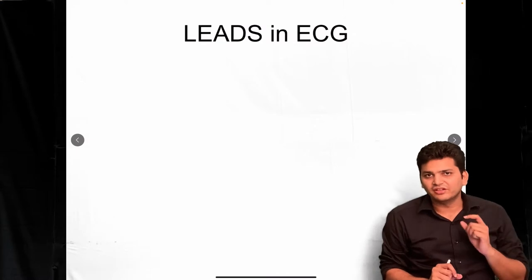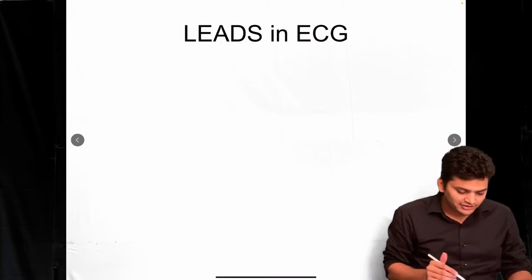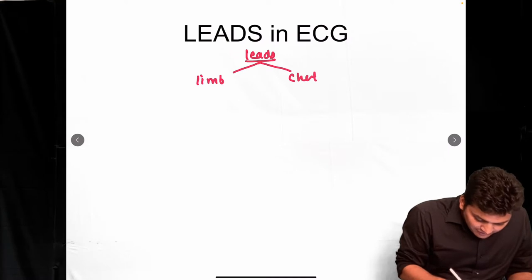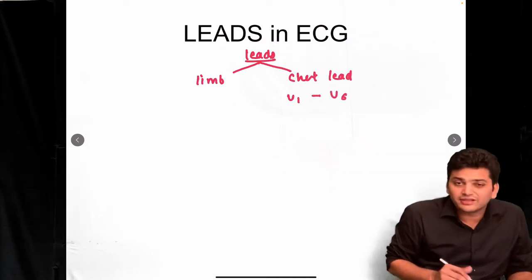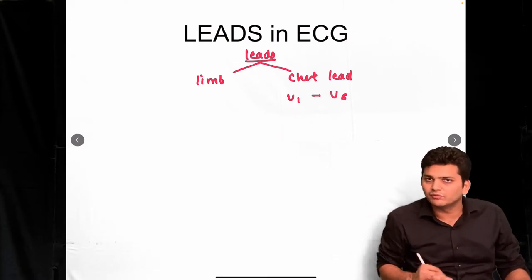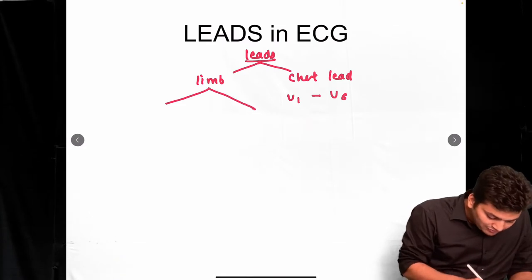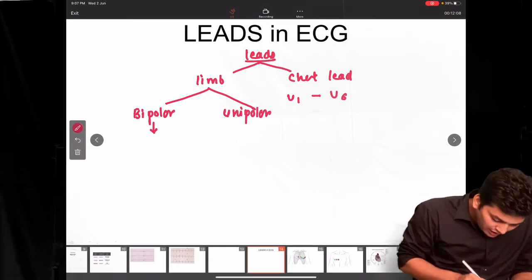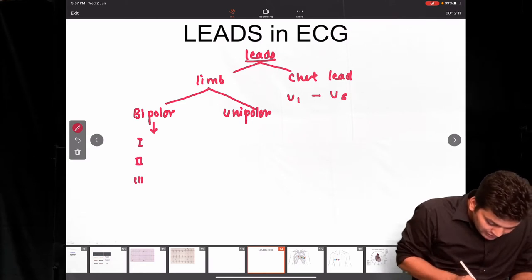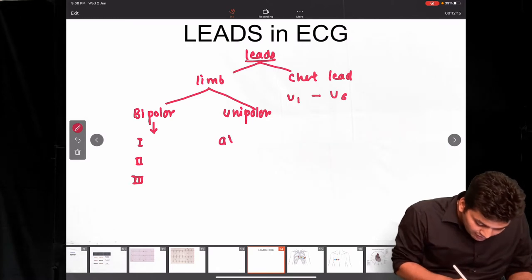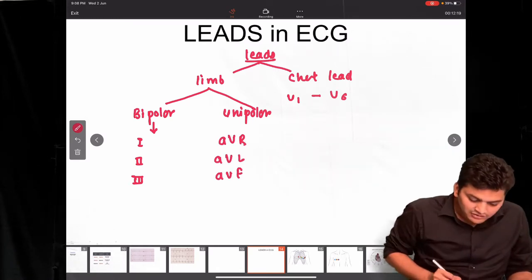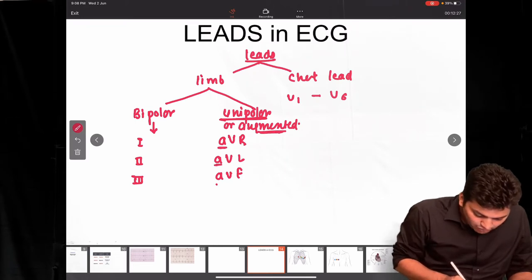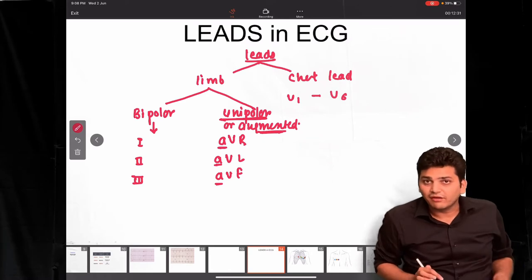In this video we are going to discuss lead placement and the various types of leads in ECG. There are two types: limb leads and chest leads. Chest leads go from V1 to V6, and sometimes V7, V8, and V9. Limb leads can be bipolar — the standard leads I, II, and III — or unipolar, which are aVR, aVL, and aVF. These unipolar leads are also called augmented leads, where 'a' stands for augmentation.